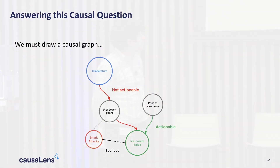Now you can see that the root cause is driven by the number of beach goers, and there is a spurious correlation that forms between shark attacks and ice cream sales. But it's spurious — eating more ice cream is not going to cause sharks to attack you more.